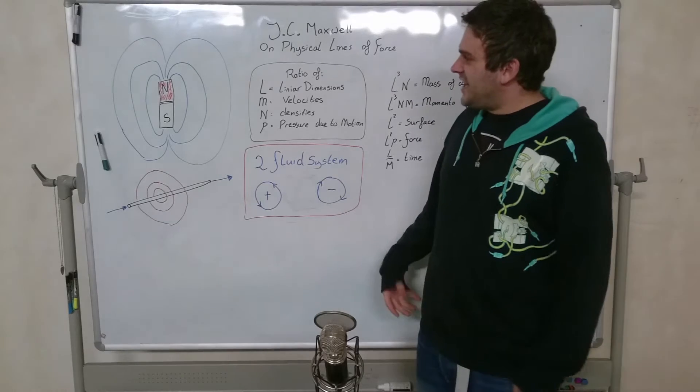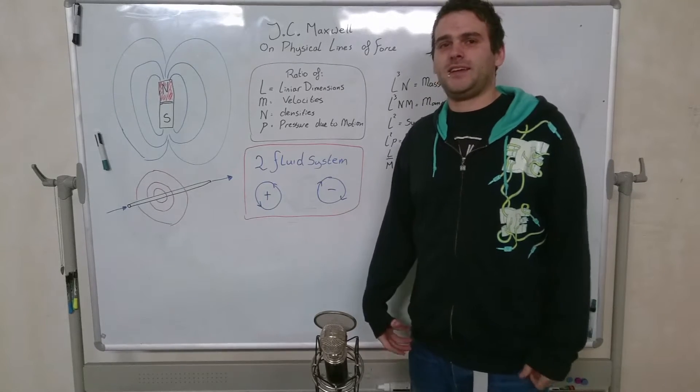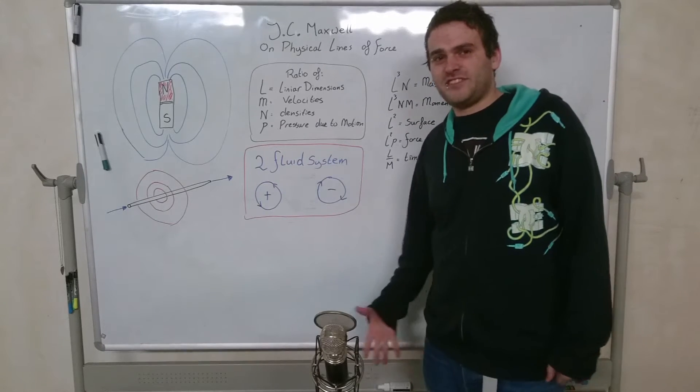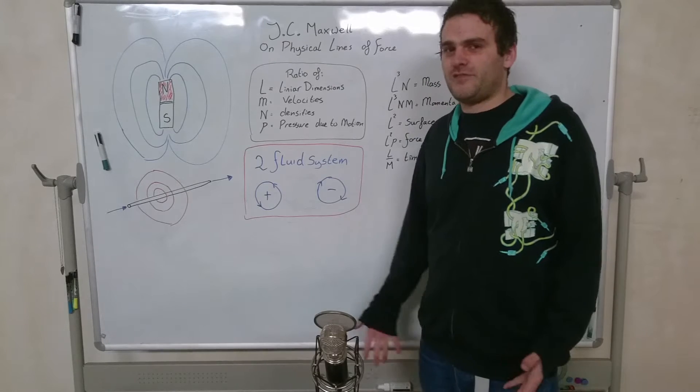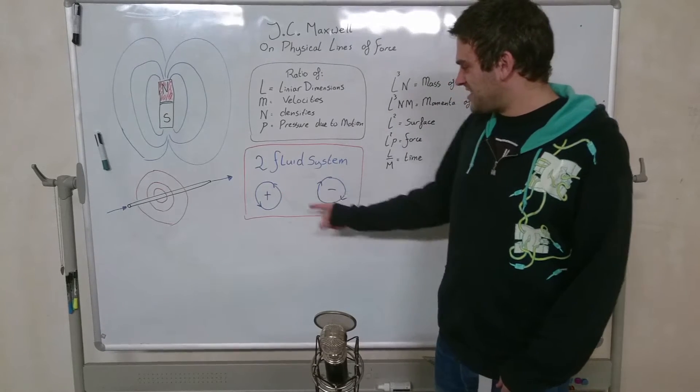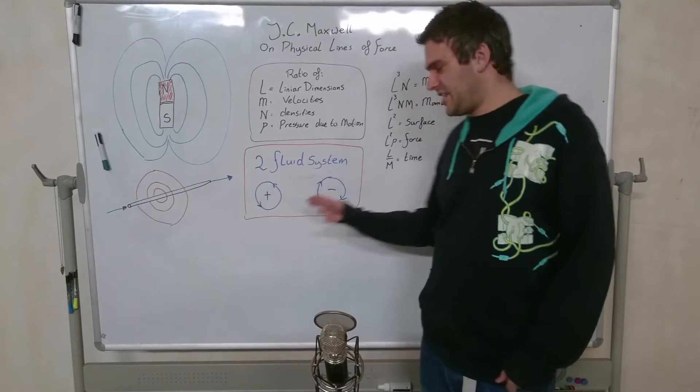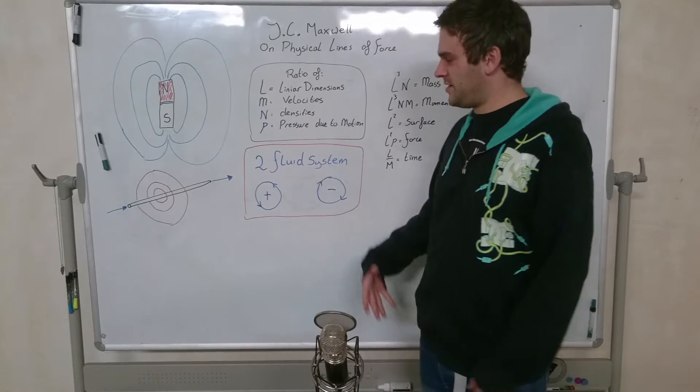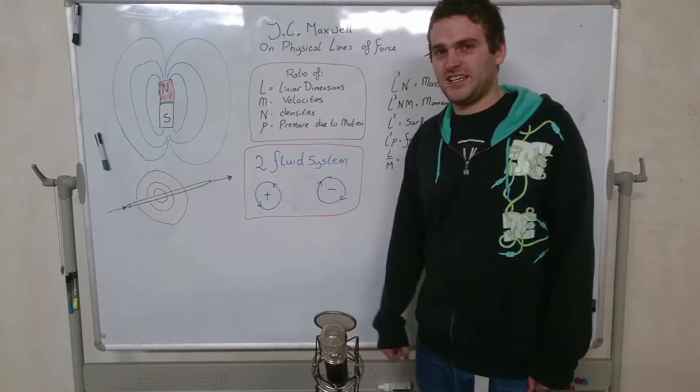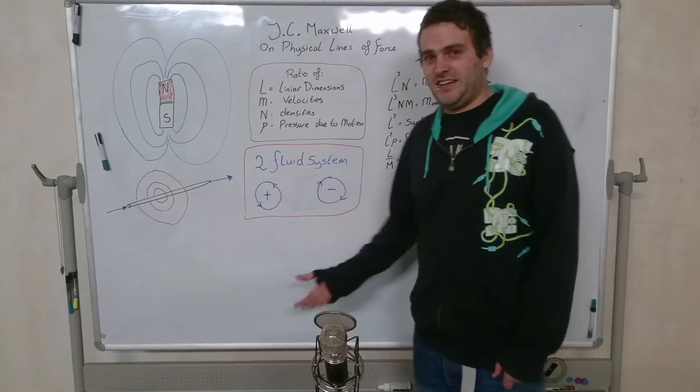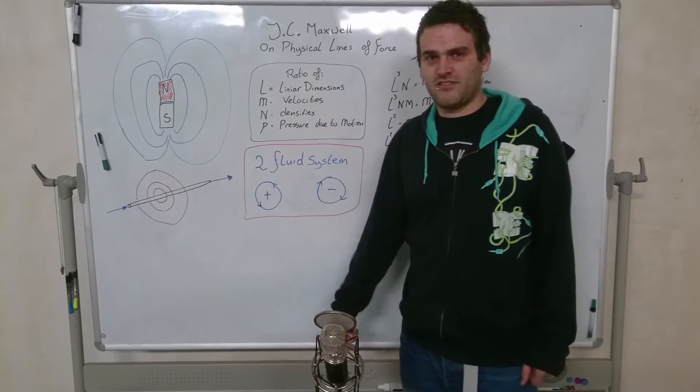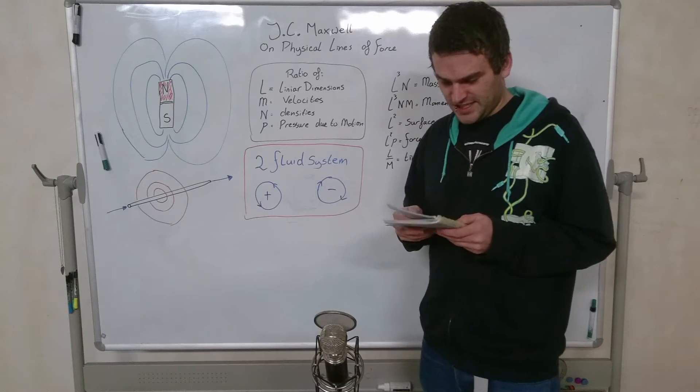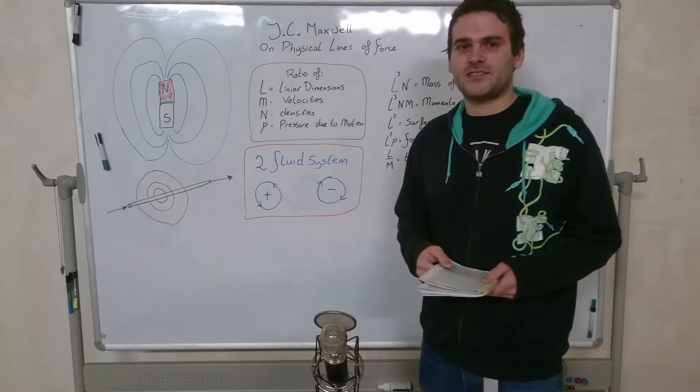The idea is that the ether is an incompressible superfluid. We call it a two-fluid system because the fluid can rotate in two different directions, either counterclockwise or clockwise. And we can call the one positive and the other negative. It doesn't matter, we can interchange it, we can change the plus and minus. But the basic idea is that the fluid can be at rest or it can rotate either left or right. We're going to work on this physical lines of force idea introduced by Maxwell.